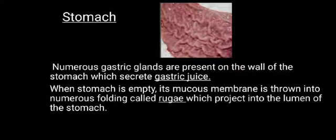In this module, we learnt about the pharynx, which is a common opening for the nasal cavity and the buccal cavity, and leads into the esophagus and the trachea. The esophagus connects the pharynx to the stomach and moves food by peristalsis. The stomach is a storage sac divided into fundus, cardiac and pylorus, and the movement of food from the stomach to the small intestine is regulated by the pyloric sphincter. Thank you.